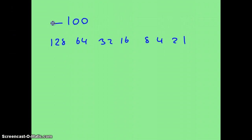The first thing that we're going to do is work out what 100 is. So 100 is 64 plus 32, which gives us 96, plus a 4, which gives us the 100. So that is 100.